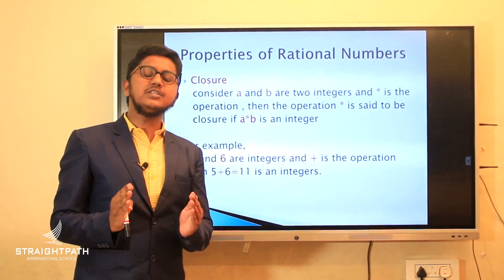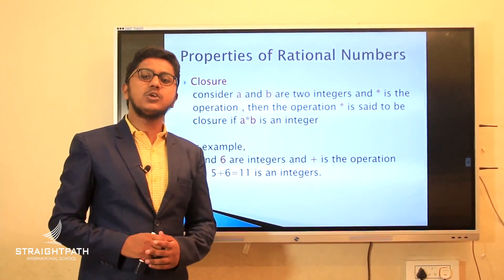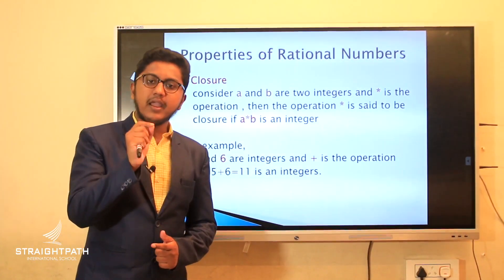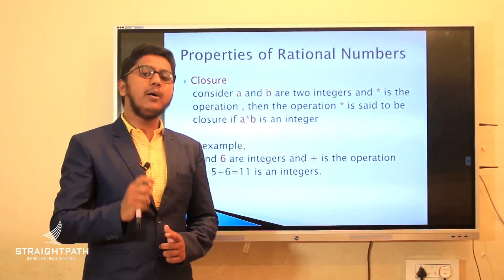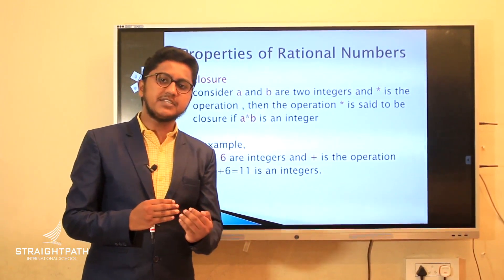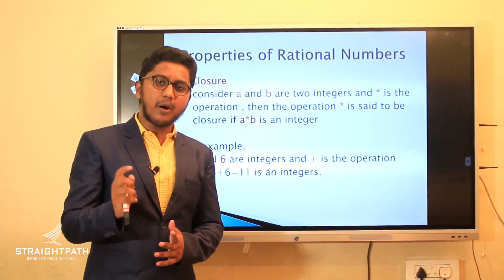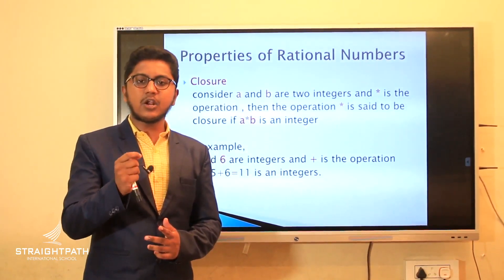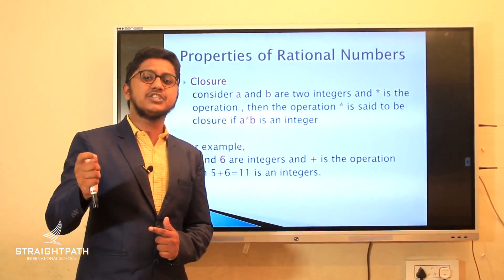Now we discuss the properties of rational numbers. The first property is closure property. Consider a by b and c by d as two rational numbers, and star as the operation — which can be multiplication, division, addition, or subtraction. The operation star is said to be closed if a by b star c by d is a rational number.